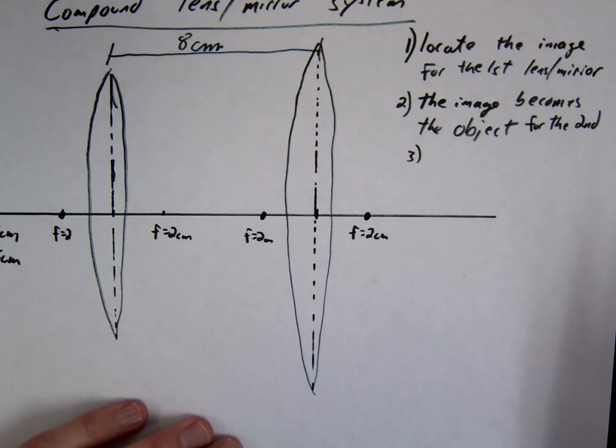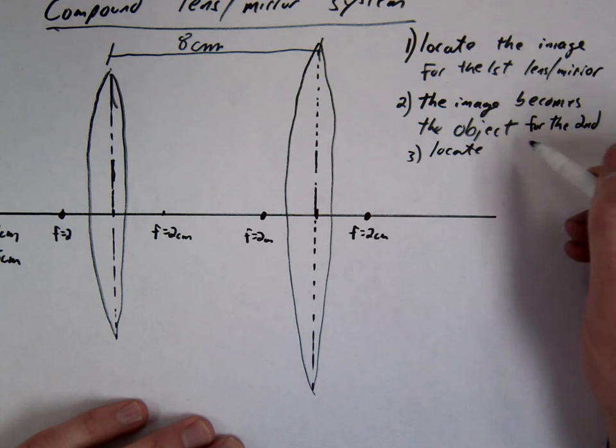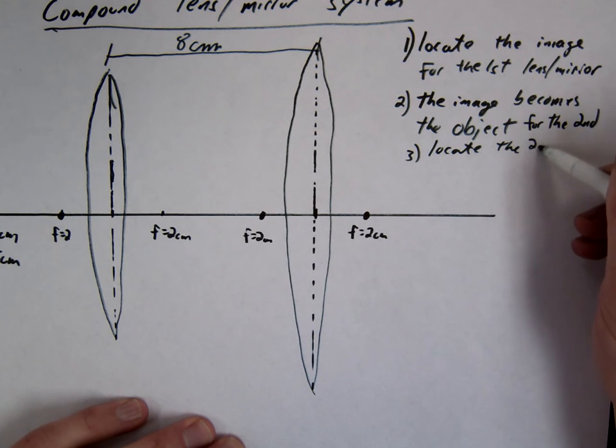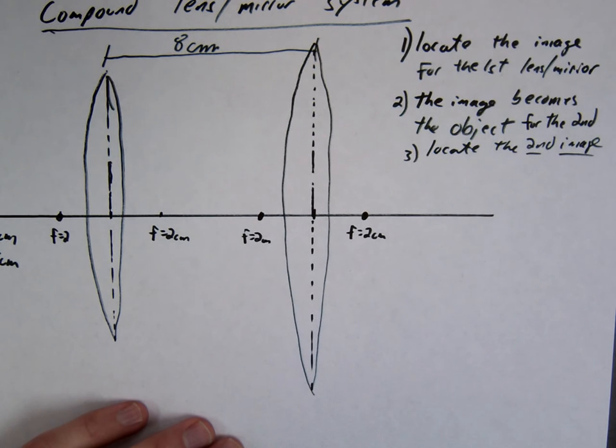In this case it's obviously lens, but it could be mirror. And the third thing then is then you're just going to locate the second image. And that becomes your final image. The location of the second image becomes your final image.